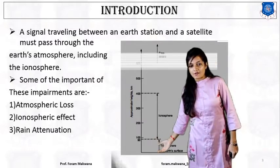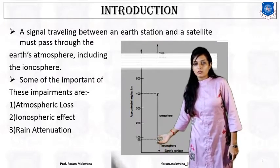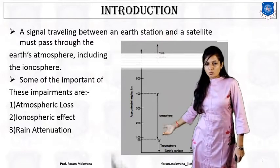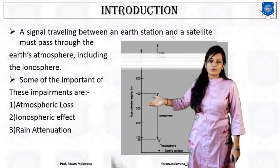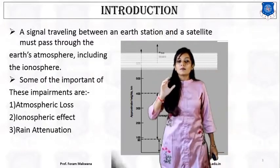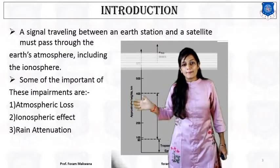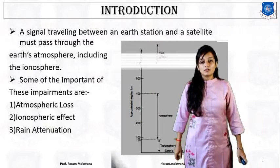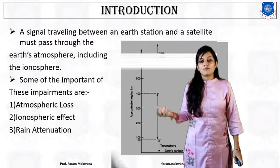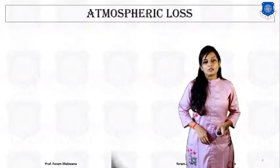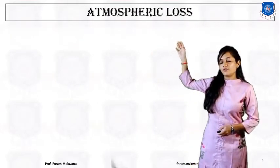As my signal travels from earth to the satellite, it has to pass through the atmosphere and the free space. Some part of the signal energy is going to be absorbed in these layers. So, what are the causes of this absorption? For that, we are going to start with atmospheric loss.